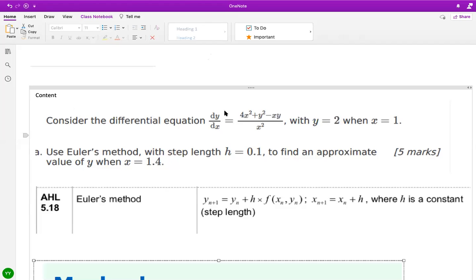The differential equation is something like this: dy/dx = (4x² + y² - xy) / x². They're going to specify the initial boundary condition. We are going to use a specific formula given in the data booklet to find the value of y when x is 1.4, with a step length of 0.1.